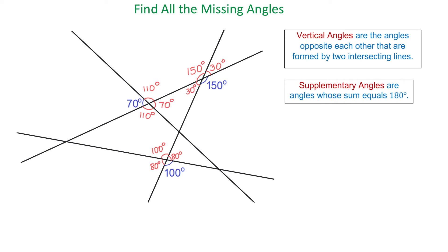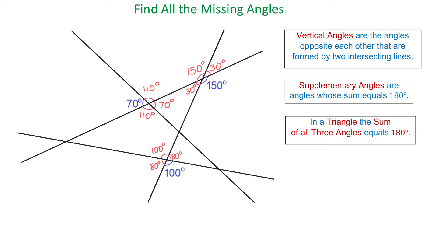Now let's talk about angles in a triangle. In a triangle, the sum of all three angles equals 180 degrees. In this triangle, two of the angles measure 70 degrees and 30 degrees, so this angle has to measure 80 degrees. This is because in any triangle, the sum of all three angles has to be equal to 180 degrees.